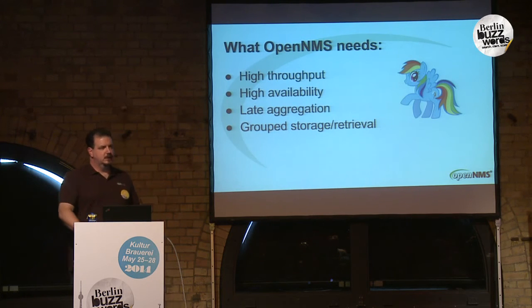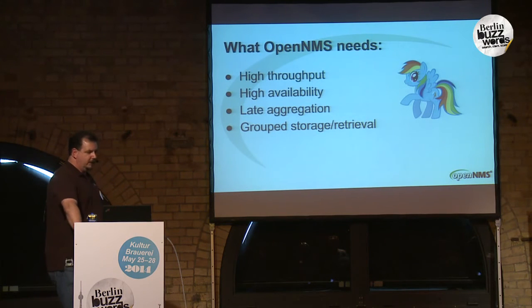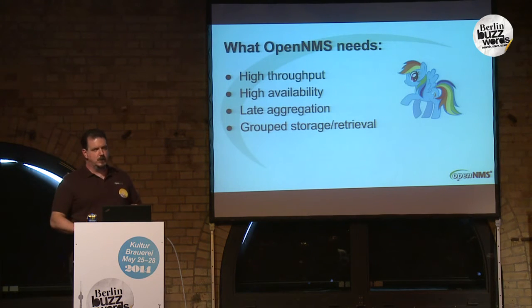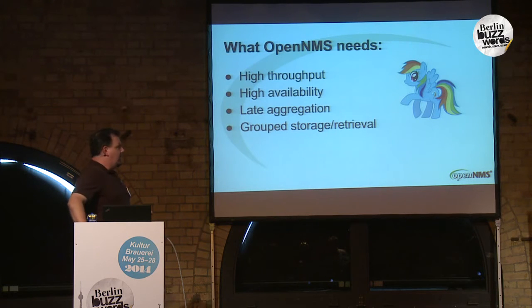So given all of this, what are OpenNMS's requirements for time series storage? We don't have enough throughput, so we need something that's higher throughput. We need better availability. We need late aggregation - to be smarter about aggregation and decoupled from storage, so we can store regardless of whether we have the capacity to aggregate. And we need to take advantage of grouped storage and retrieval - we access metrics together, we even collect and store them at the same time, so whatever we use should make that easy.